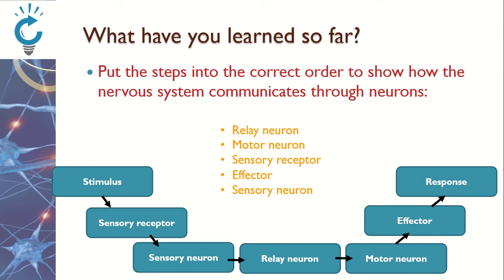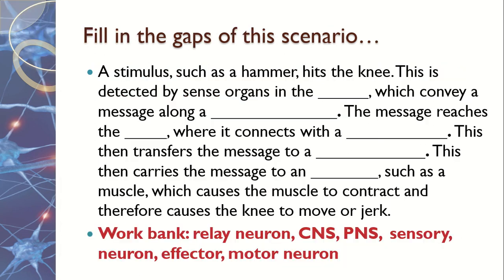Sometimes we don't use all three neurons. We can use all of them, as in that example, but sometimes we only use one or two — for example, the sensory neuron and relay neuron in the context of a reflex arc.